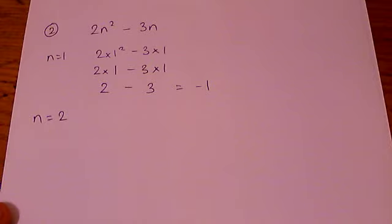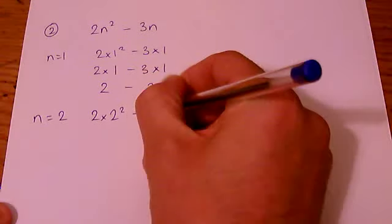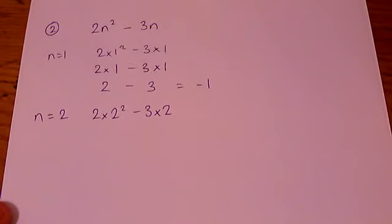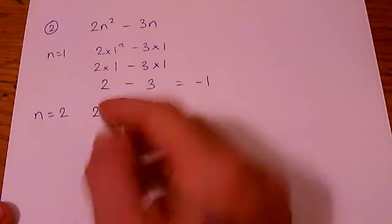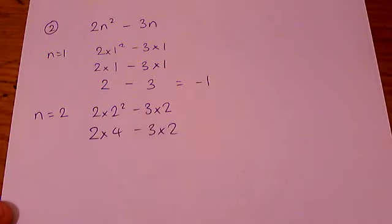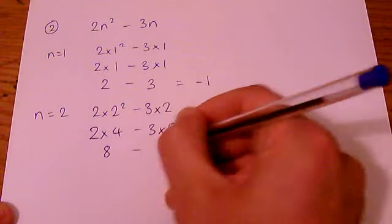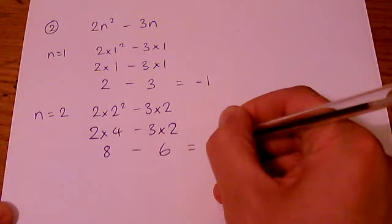For the second term you have to do 2 times 2 squared minus 3 times 2. 2 squared is 4. And therefore we get 8 minus 6 which is 2.